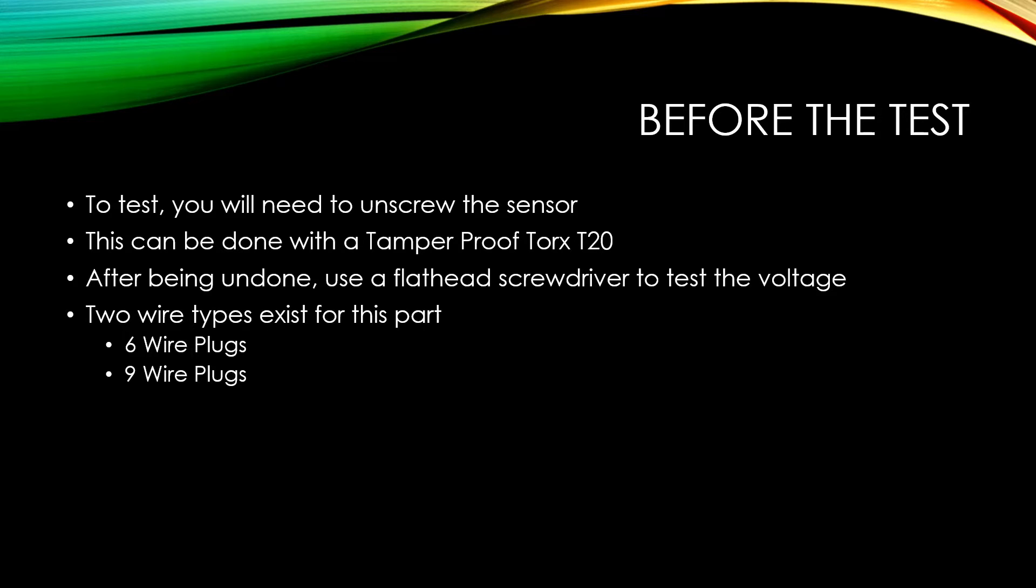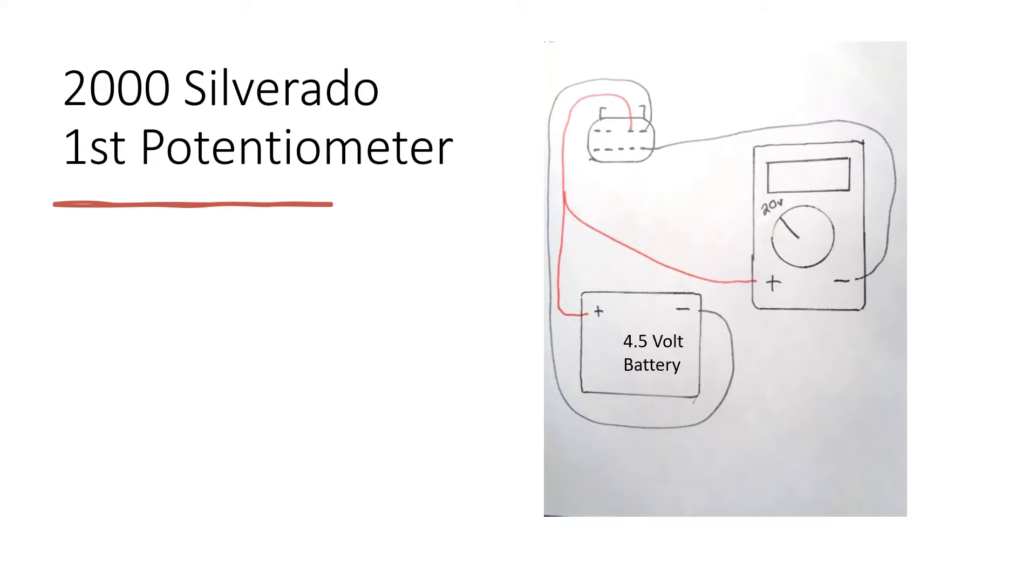There are two wire types that exist for this part: a six wire plug and a nine wire plug, and both will be tested in this video. After unscrewing the sensor and setting up the power supply, you're also going to need a multimeter set to 20 volts just like this.